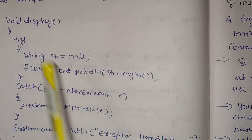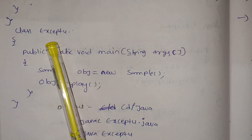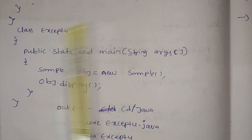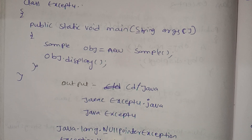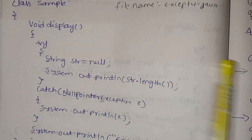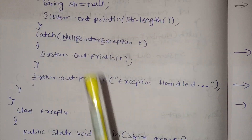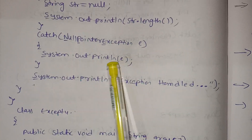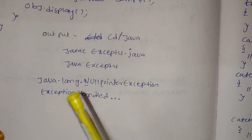We can compile it and save the file name. We can compile it using javac except4.java and run java except4. We named the class and got a NullPointerException because we have a null string. We tried to find string.length, but the string is null, so we have a NullPointerException in the catch block. The exception is handled.